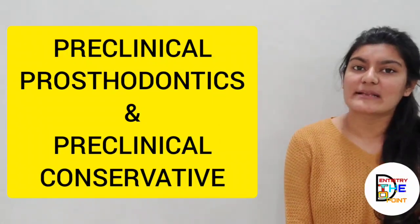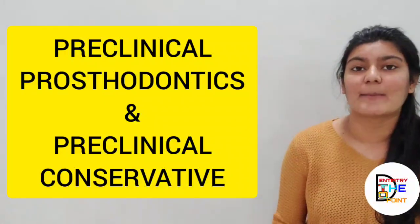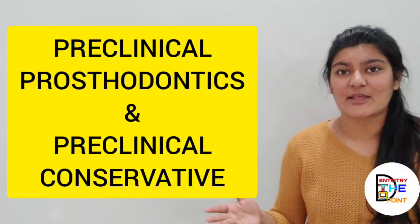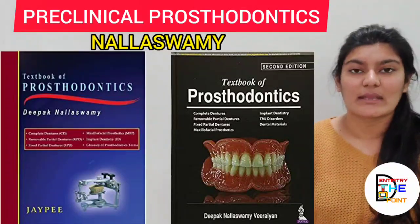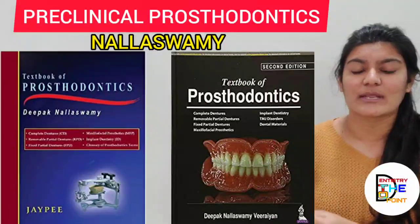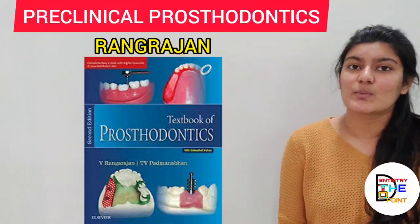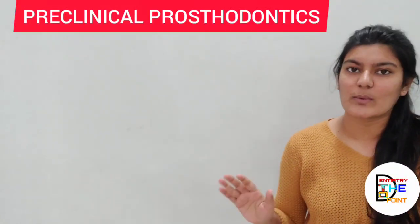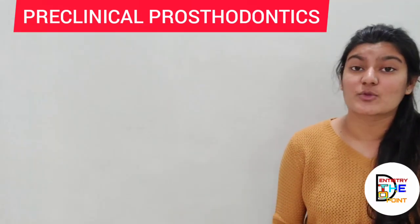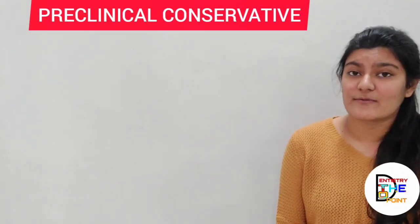Apart from the main subjects, you also have two more things: preclinical prosthodontics and preclinical conservative. For these, people usually do not buy the books — they borrow from the library or take from seniors. For preclinical prosthodontics, there are two books: firstly Nalaswami, which is a very good book with very detailed explanation from the basics covering what, why, and how. Another book is Rangarajan, which is also a very good book. Nalaswami appears quite thick, but both Nalaswami and Rangarajan are the recommended books for preclinical prosthodontics.